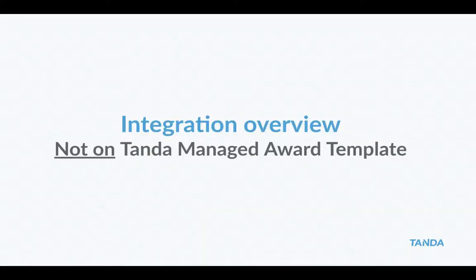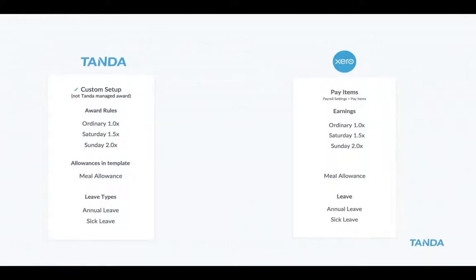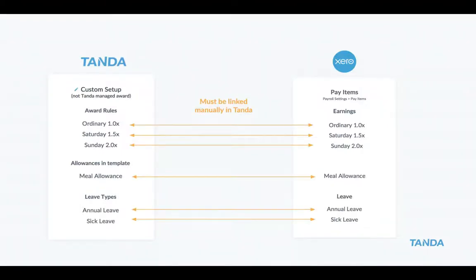The other way it could be set up is when you're not on a Tanda managed award — so you might be on a completely custom setup with custom rules you've built in yourself, or maybe you're on an award template plus you have a few custom allowances or custom award rules. Unlike the previous flow, if you're on a custom setup you'll need to make sure that you link everything in Tanda with pay items from Xero. Nothing will get pushed across or created automatically. So in Tanda, you go through each of your award rules, each of your allowances, and link them with relevant pay items that have been synced across from your Xero account. We'll talk through how this works in the upcoming steps, so don't worry too much about it.